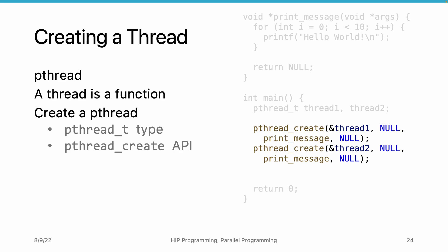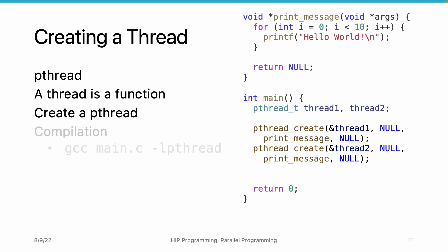Compiling the program needs special arguments. We want gcc to be able to link to the pthread library implementation. Therefore, we pass in the argument "-lpthread". It is required.